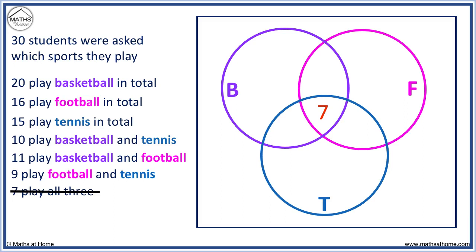Now we look for other numbers that overlap between two sports. For example, 10 people play basketball and tennis. The overlap of basketball and tennis is here. We already have 7 people in this region, so we need 3 more so that there are now 10 people that play both sports in total.